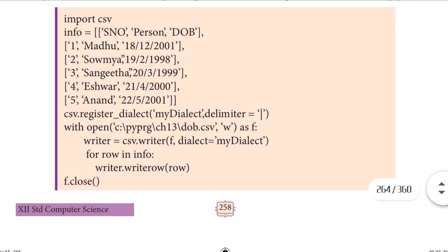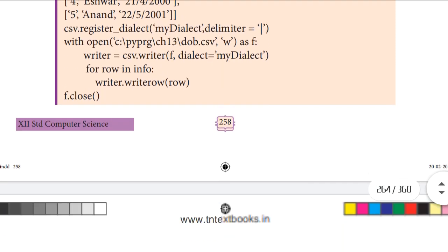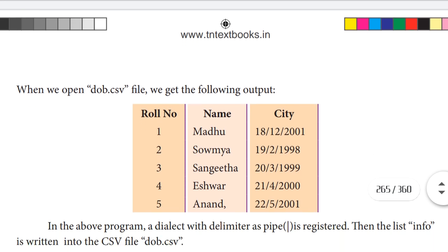As usual, we have to import the CSV module. Next we have a list of data — the list name is info. Next, we are registering a custom delimiter using csv.registerDialect, where my_dialect delimiter is equal to the pipe symbol. With open, we are opening the CSV file in write mode — F is the file object. Then, with the writer function, we apply the delimiter into the CSV file.